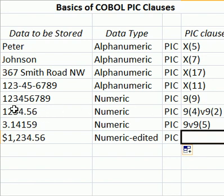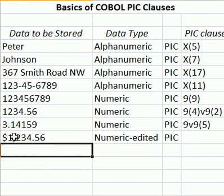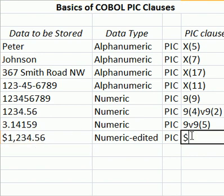If I want to display a value with a dollar sign, a comma at the thousandths place, and a physical decimal, the PIC clause can specify: dollar sign, Z, Z, 9, decimal, 9, 9. The Z will replace a single leading zero if it exists in that placeholder spot. If it is not a leading zero, it defaults to act like a regular 9 and displays the numeric value. Give it a try in your COBOL programs — hopefully this helps you better understand the different data items and COBOL PIC clauses.